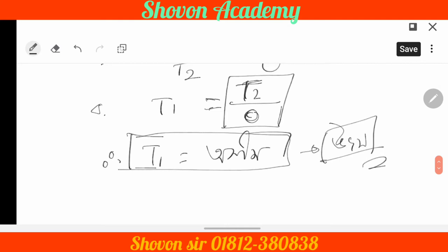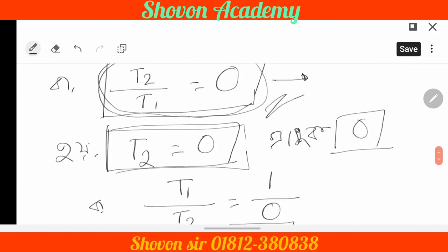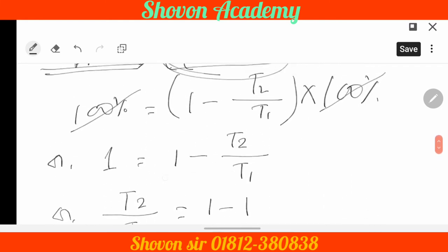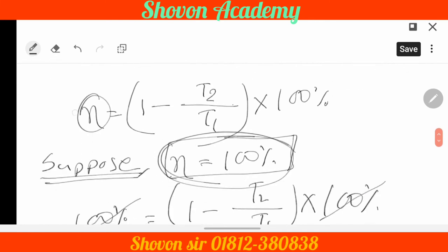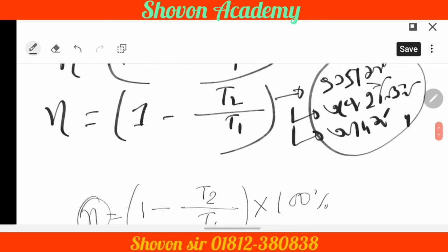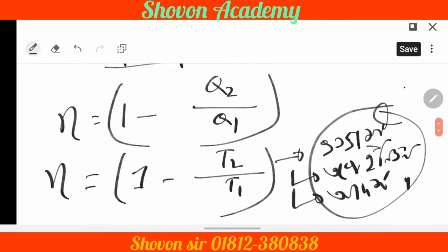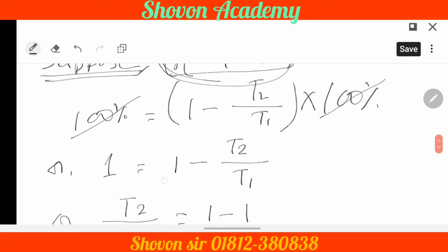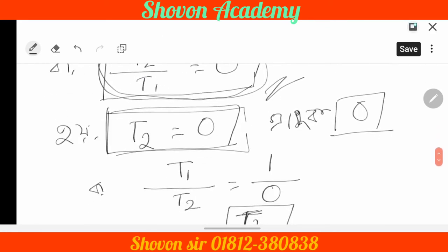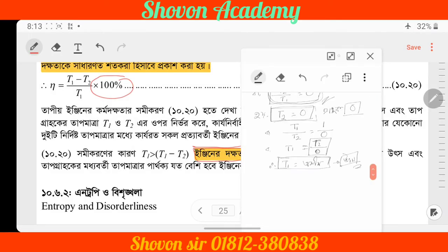If eta equals 100%, then T2 by T1 tends to zero, which means T2 equals zero — an impossible condition. So efficiency cannot exceed 100%, and if we have more than 100%, that fails the test.